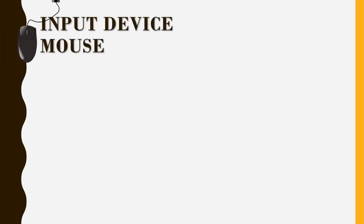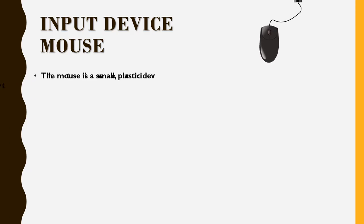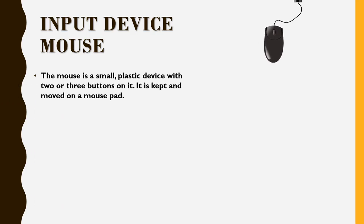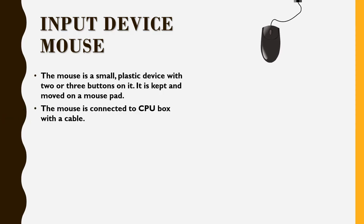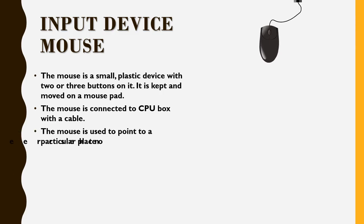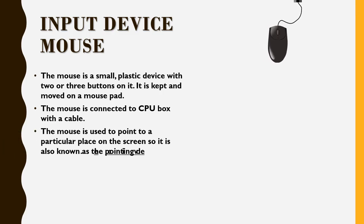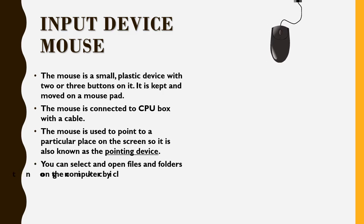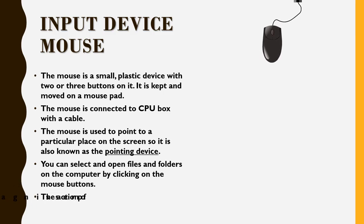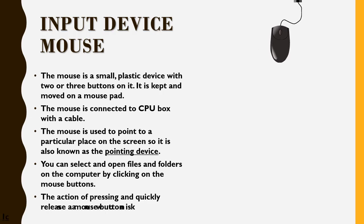Input Device — Mouse: The mouse is a small plastic device with two or three buttons on it. It is kept and moved on a mouse pad. The mouse is connected to the CPU box with a cable. The mouse is used to point to a particular place on the screen, so it is also known as the pointing device. You can select and open files and folders on the computer by clicking on the mouse button. The action of pressing and quickly releasing a mouse button is known as clicking.